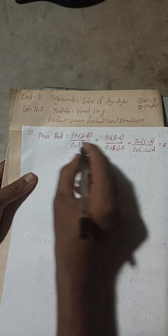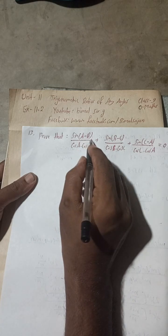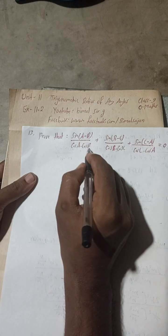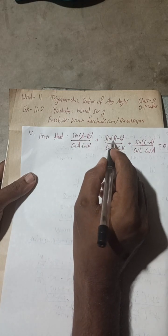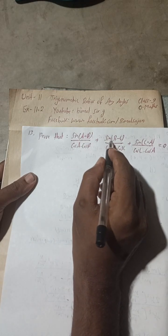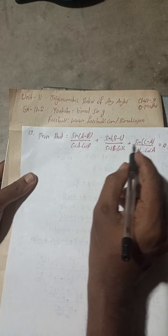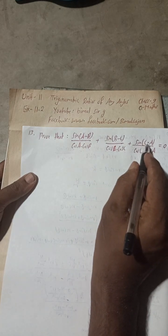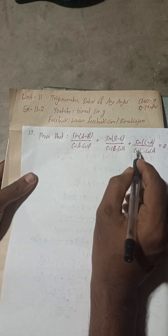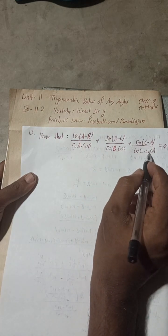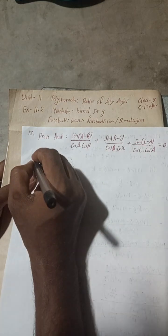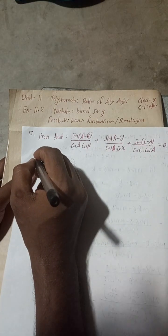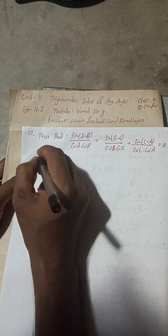We need to prove that: sin(A − B) / (cos A · cos B) + sin(B − C) / (cos B · cos C) + sin(C − A) / (cos C · cos A) = 0. We will now take the LHS part.